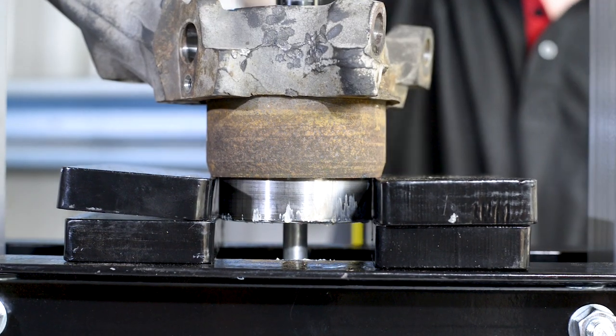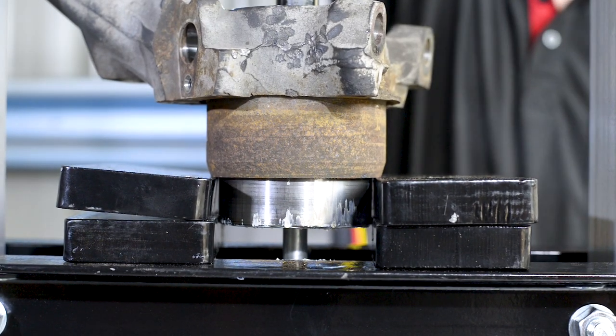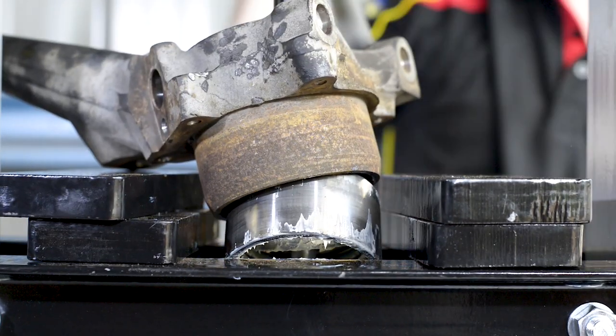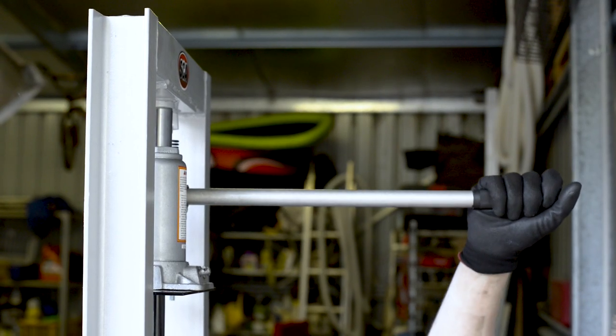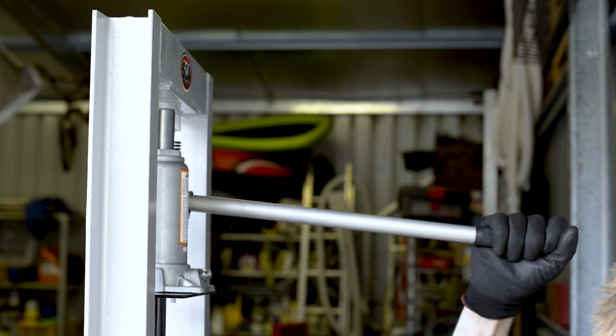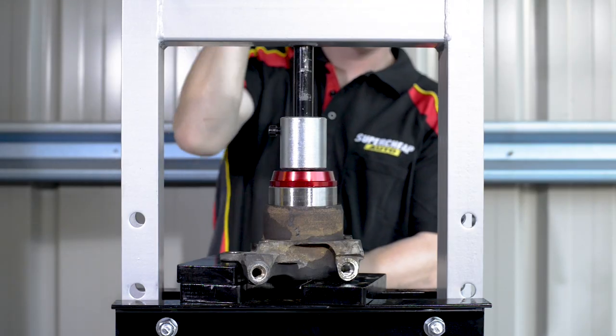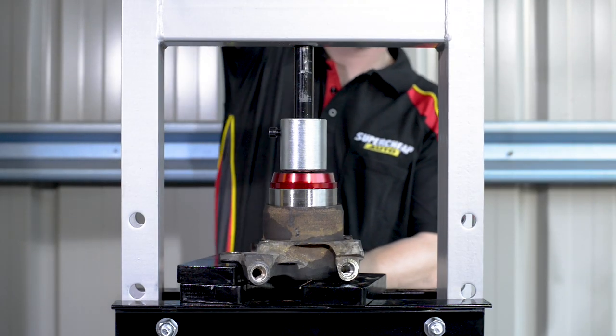Even separating steering knuckles and changing sealed type wheel bearings will be a breeze. Unlike belting away with a hammer, operating the handle on your ShopPress applies gentle, even pressure to the workpiece, so you can choose how much force to apply.